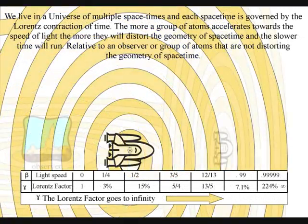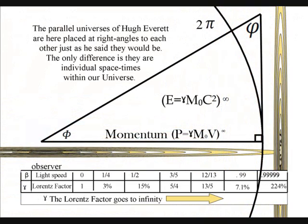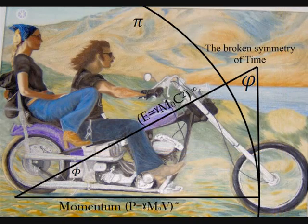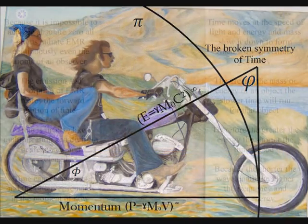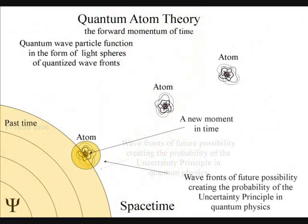We know time is a variable because we have time dilation when objects accelerate towards the speed of light. And we also have time dilation around objects of great mass. Time moves at the speed of light, and energy and mass slow it down to form their own space-time geometry. The greater the mass or energy of an object, the slower time will run for that object.